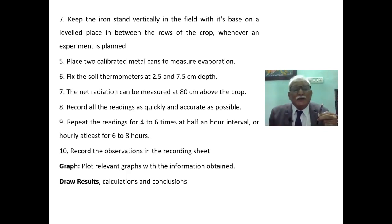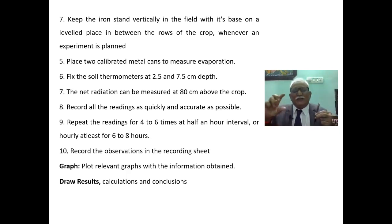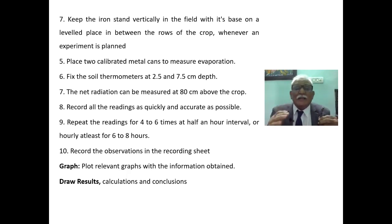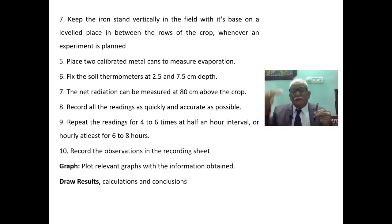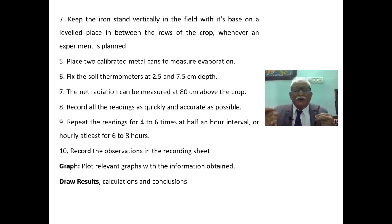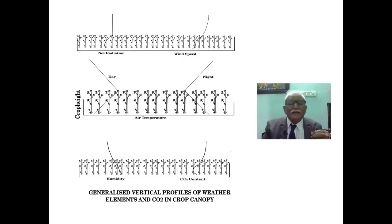Place the two calibrated metal pins to measure the comparison. Fix the soil thermometers at 2.5 and 7.5 cm depth so that you will get 5 centimeters depth of soil heat flux. The net radiation can be measured at 80 cm above — the difference between incoming and outgoing net radiation. Record all the readings as quickly and accurately as possible. Repeat the readings 4 to 6 times and record and plot the graph.